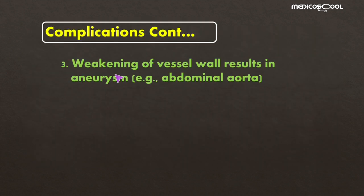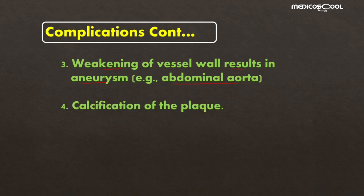The third major complication of atherosclerotic plaque is weakening of the vessel wall, which may result in aneurysm formation, for example of the abdominal aorta. The fourth complication is calcification of the plaque, which leads to hardening of the arteries and can cause hypertension, stroke, or ischemia-like symptoms.